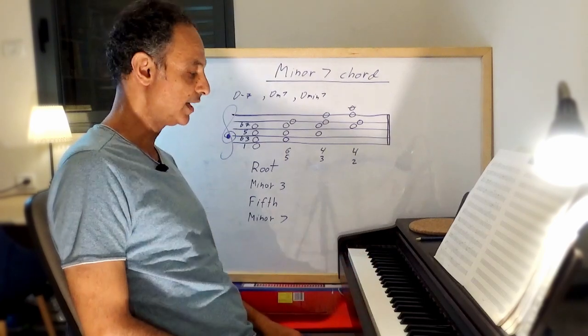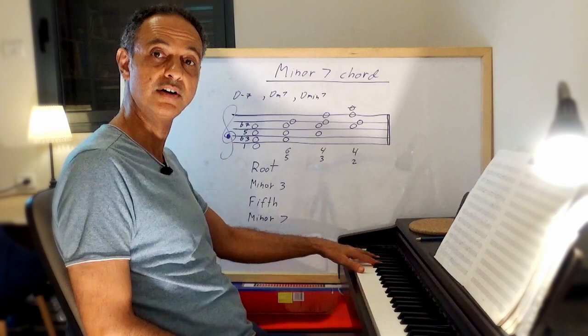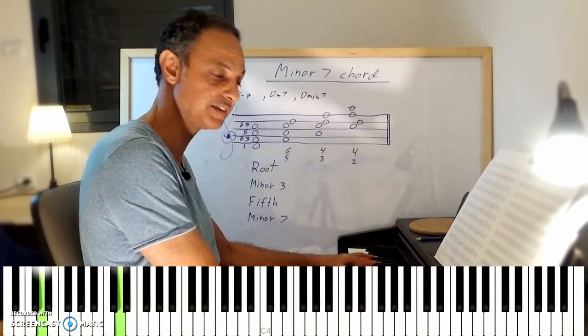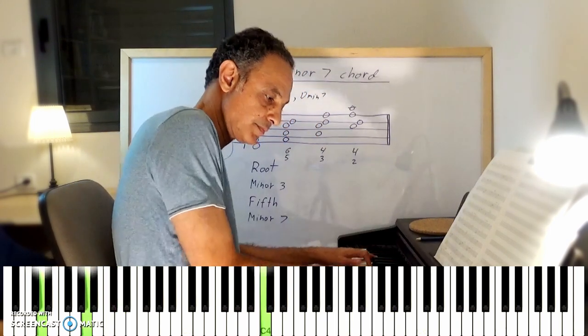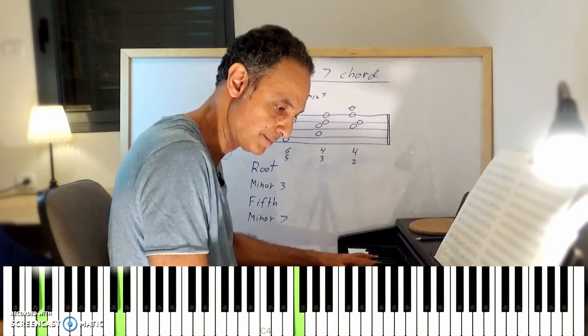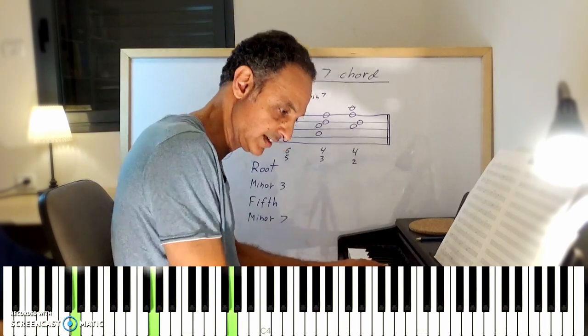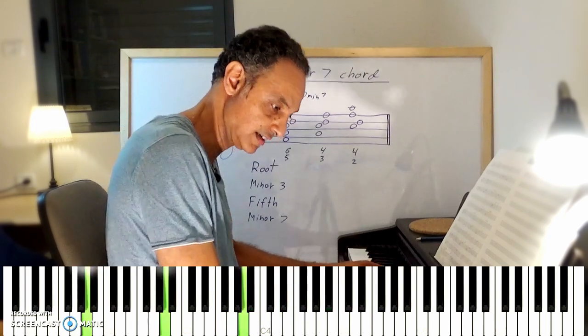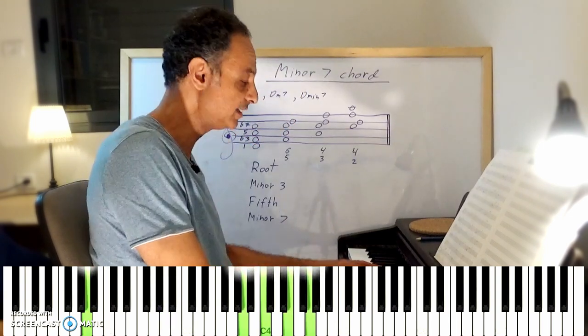You can also play it just with root position. So for example, left hand has the root, and with your right hand, just the root position. Going to G minor seven. Going to A minor seven. And back to D minor seven.